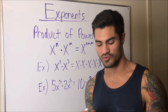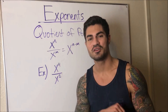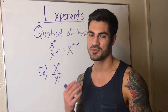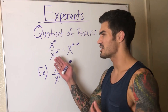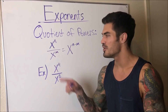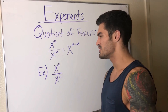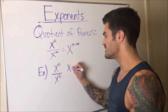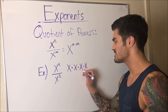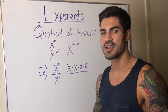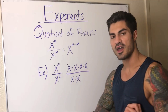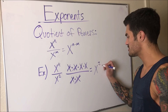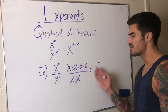Now let's move on to the next rule: the quotient of powers — dividing. Following the trend: when we multiplied with the same base, we added the exponents. Now we're dividing, so we subtract the exponents. For example, x⁴ over x² — we can write x times x times x times x on top, and x times x on the bottom. Two x's cancel, leaving x², which is 4 minus 2. The rule checks out.